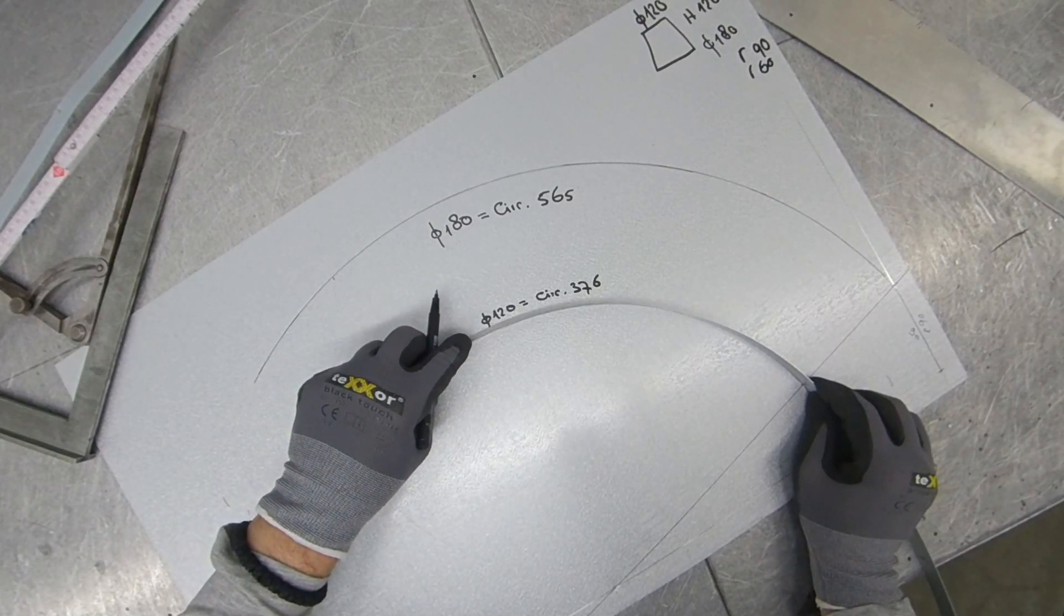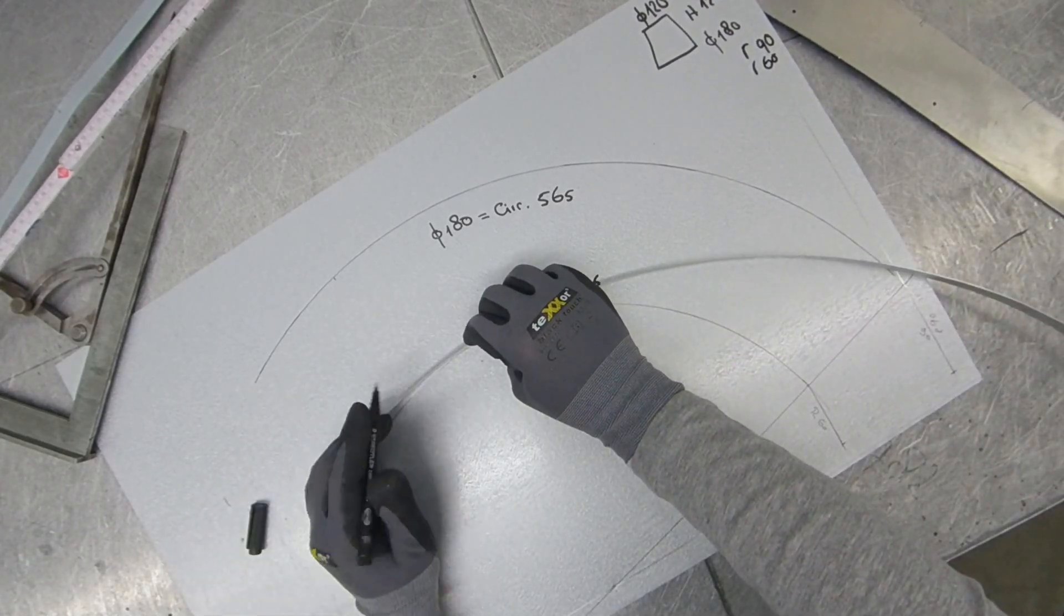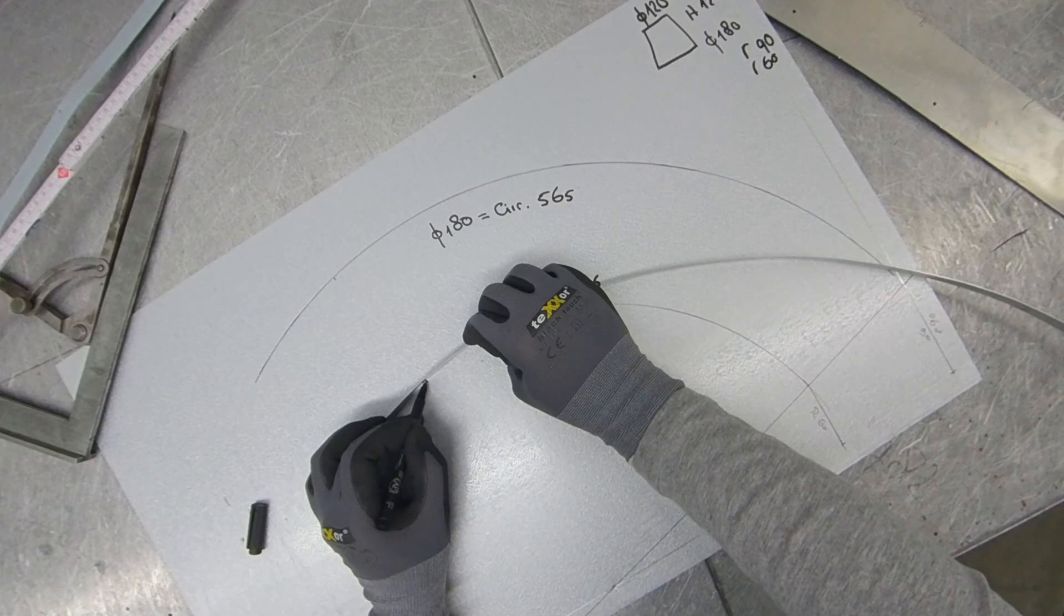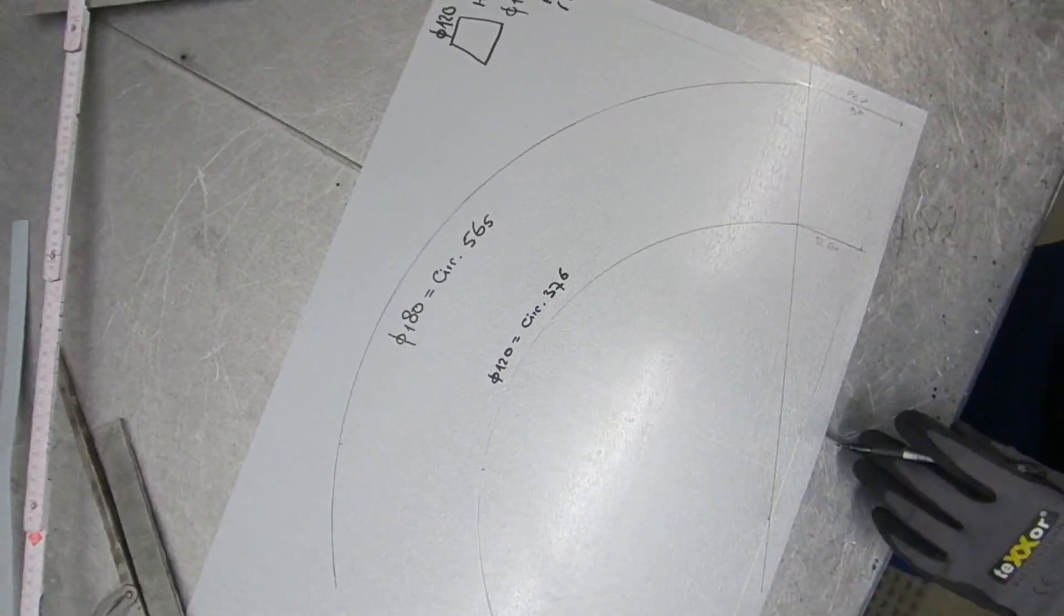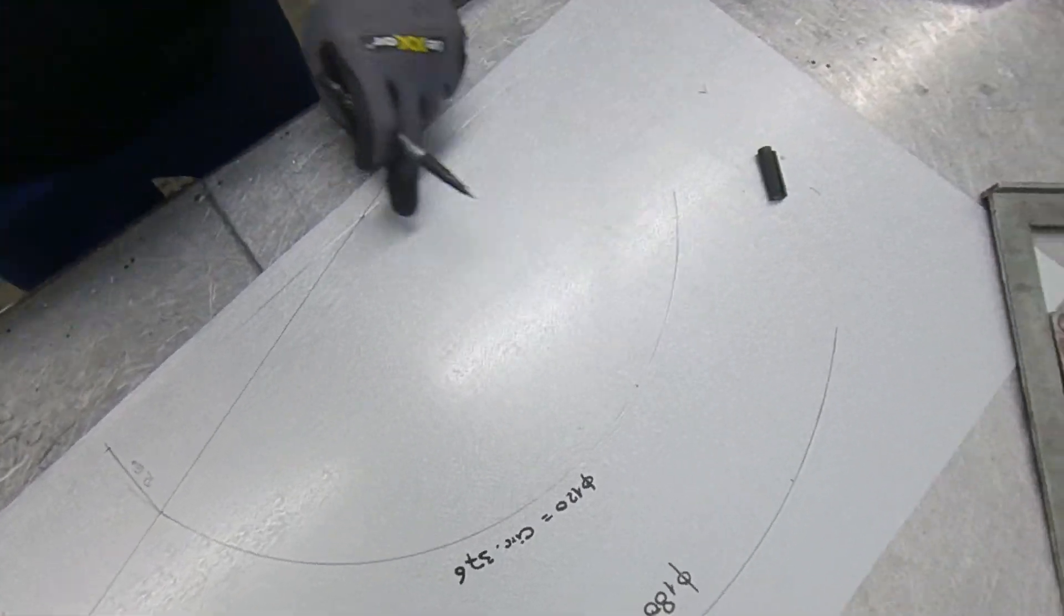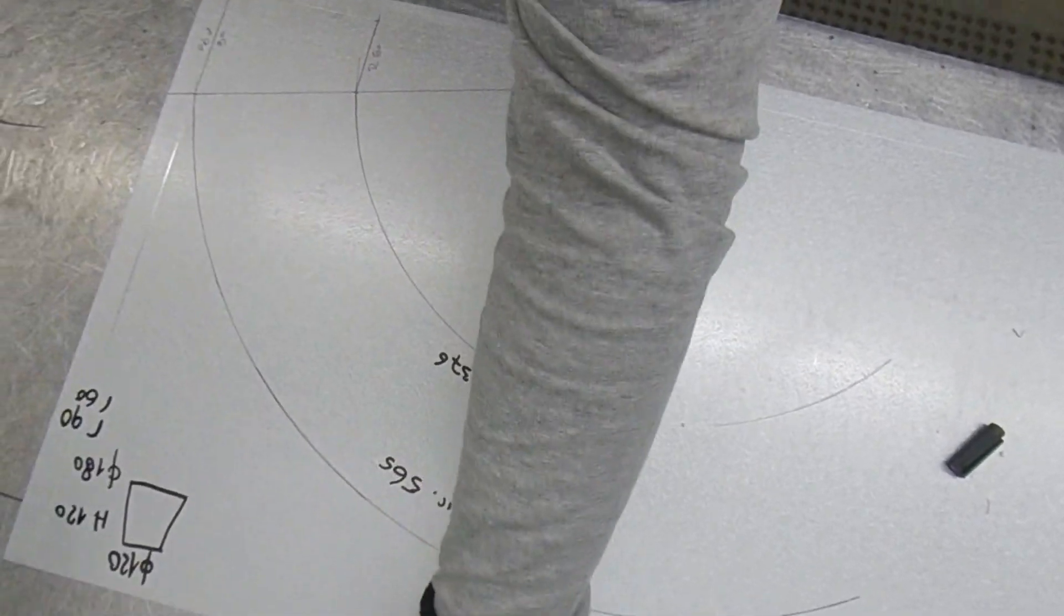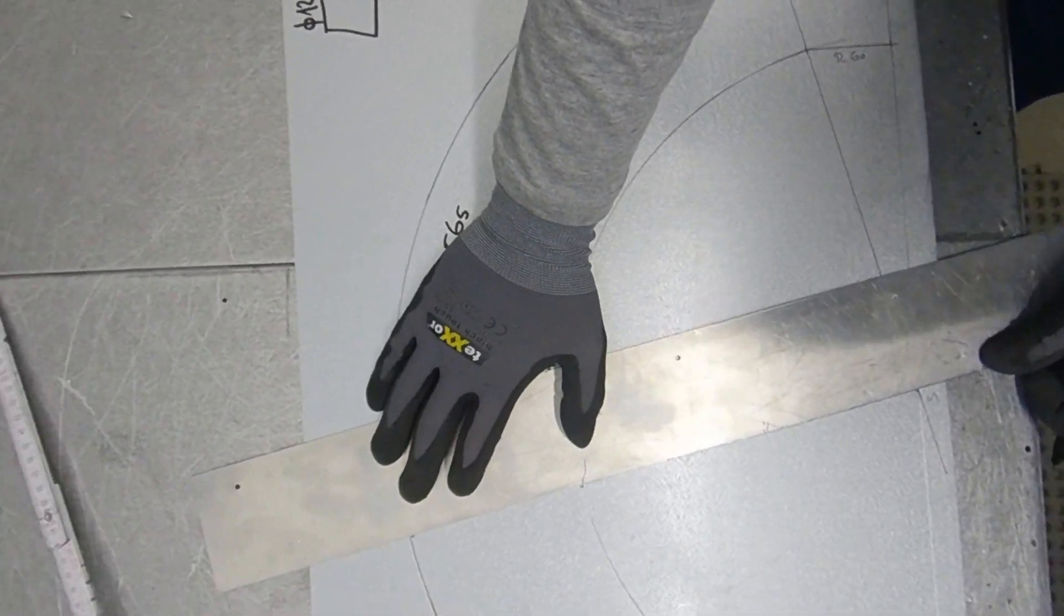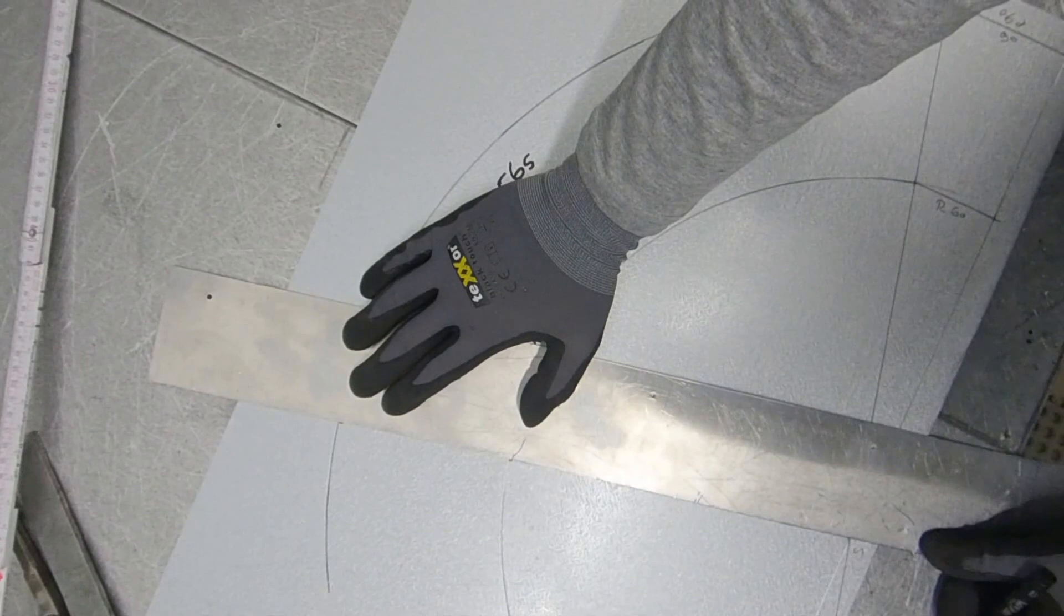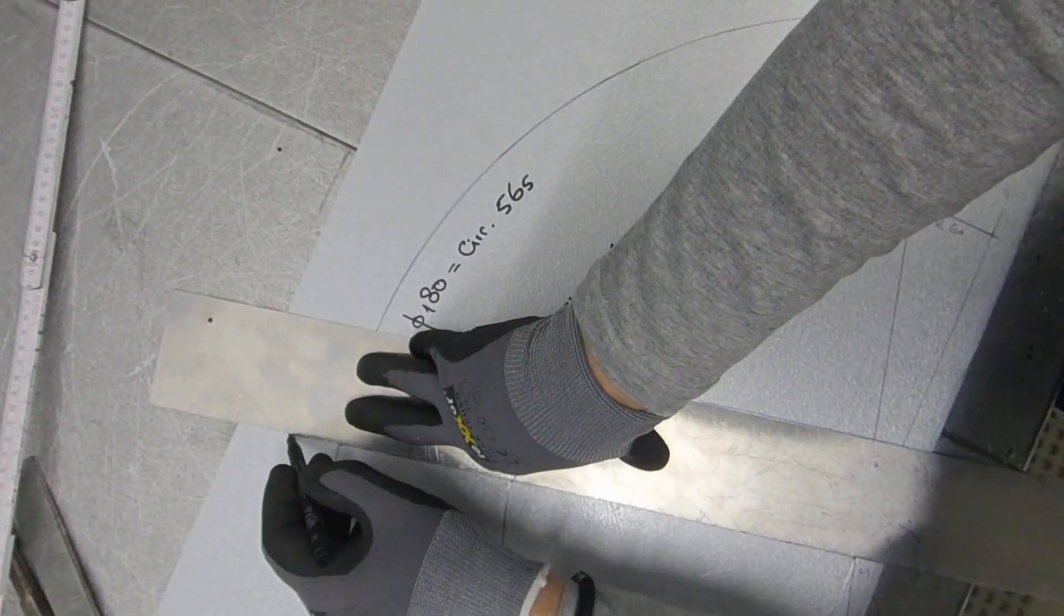It's important that the circumference is exactly right. Here we have the small one. Now these two and the S-point here, they must all be in one line. As you see, now I'm pulling here.